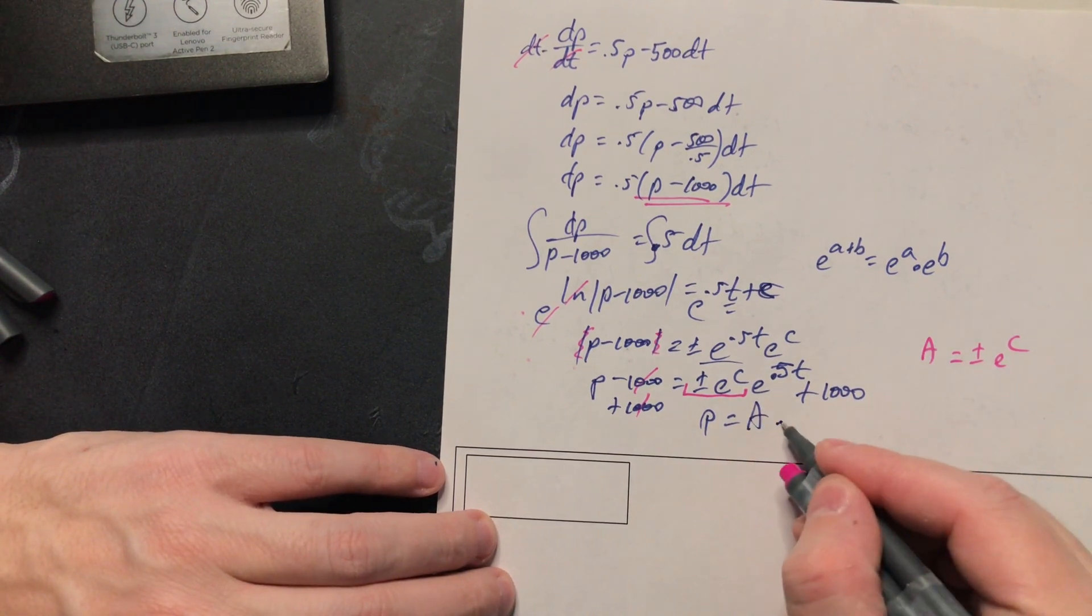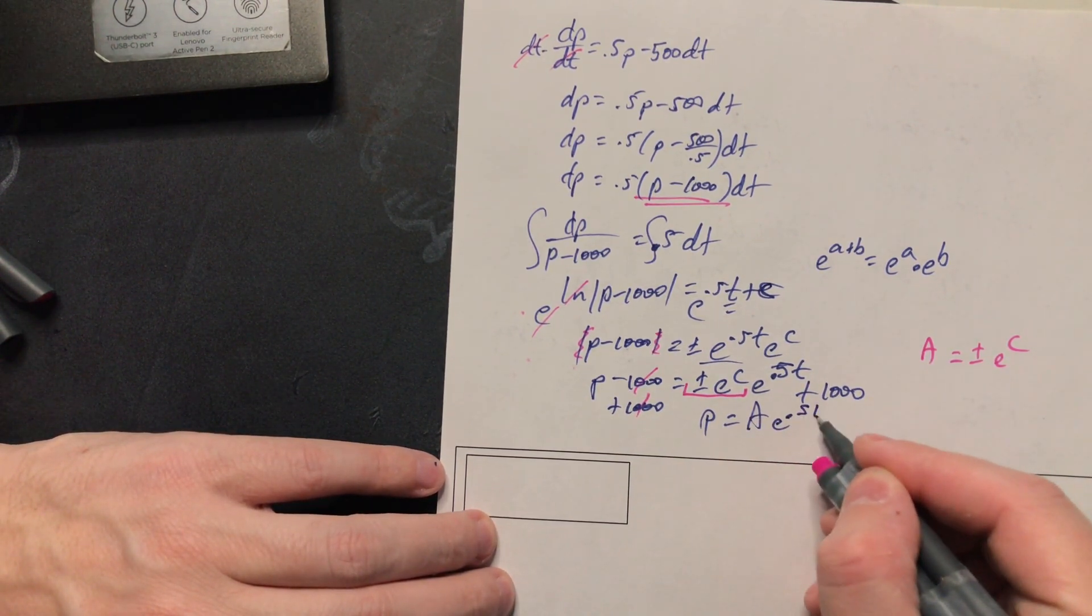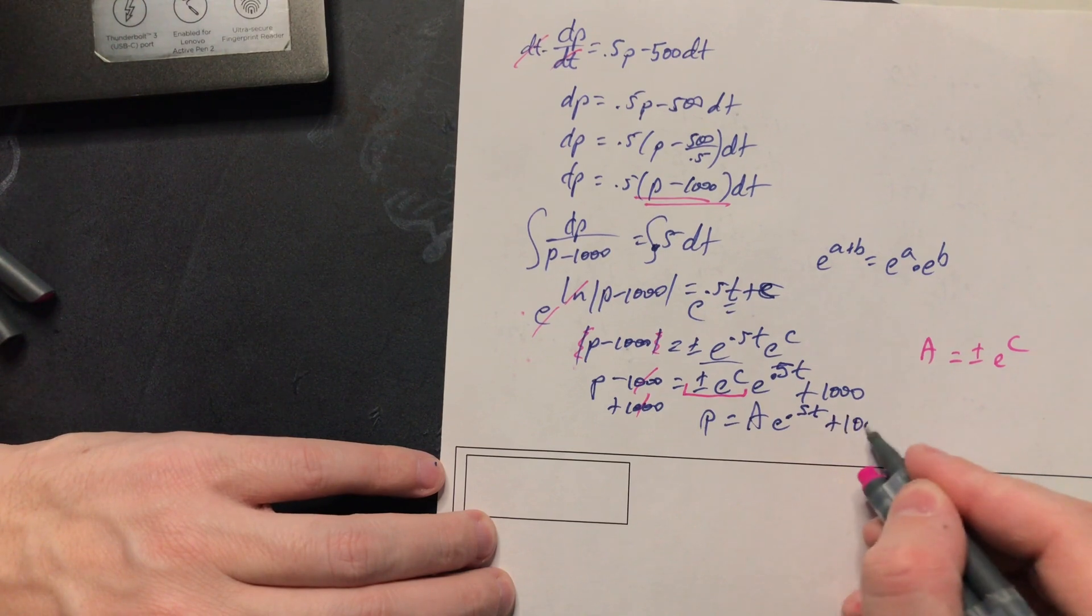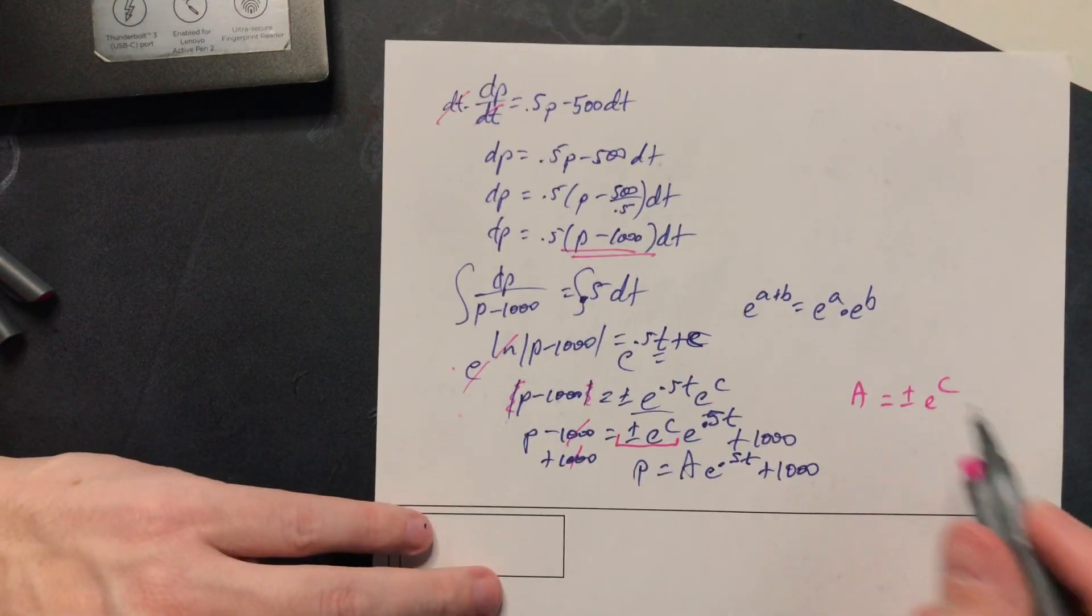So you're going to have a e to the 0.5 t plus one thousand.